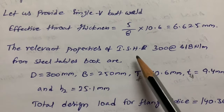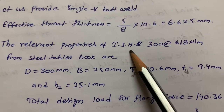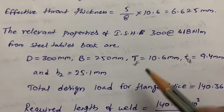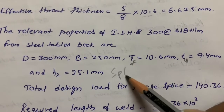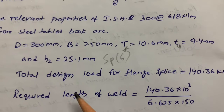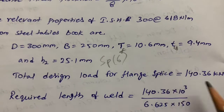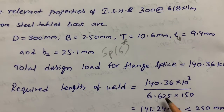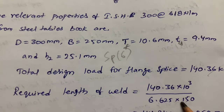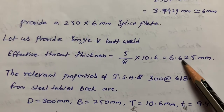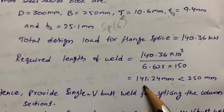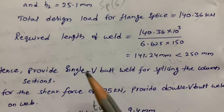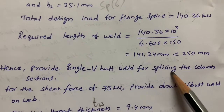The relevant section properties are taken from the SP6 steel tables book. Using the total design load for the flange splice (already calculated), the required length of weld is: total load / (6.625 × 150). This gives 141.24 mm, which is less than 250 mm — hence it is okay. So we provide a single-V butt weld for splicing the column flanges.